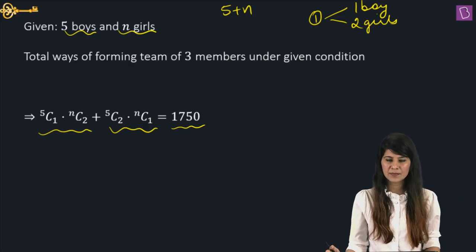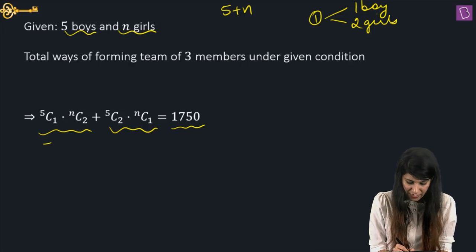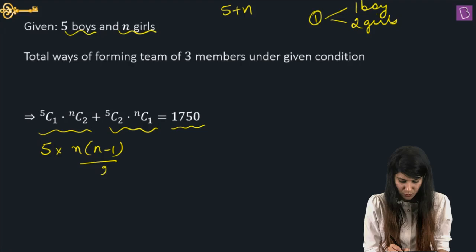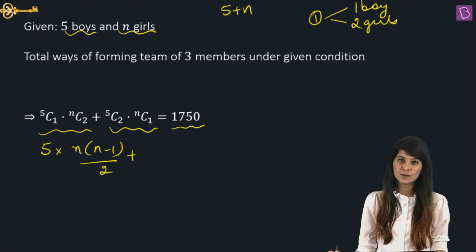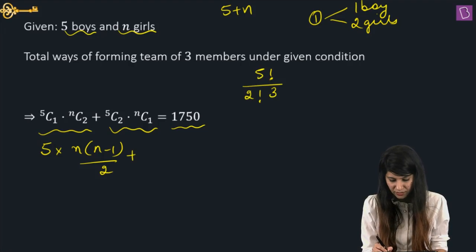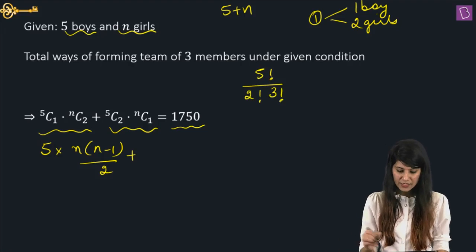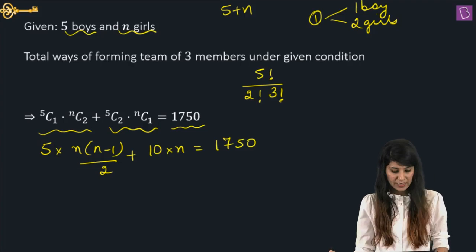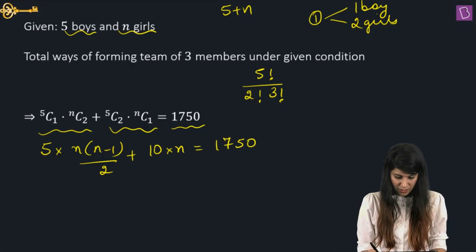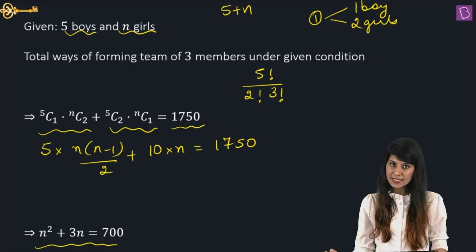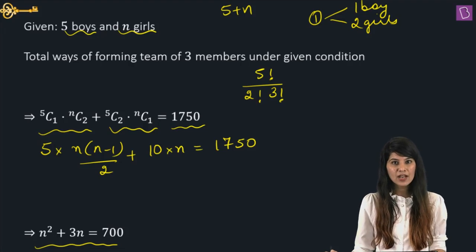5C1 is 5. NC2 is N(N−1)/2. Plus 5C2 is 10. Multiply NC1 which is N. So: 5 × N(N−1)/2 + 10 × N = 1750. If you take LCM, you get the quadratic equation: N² + 3N = 700.